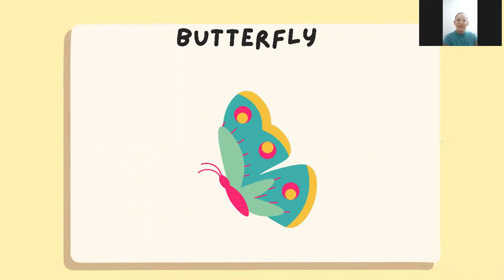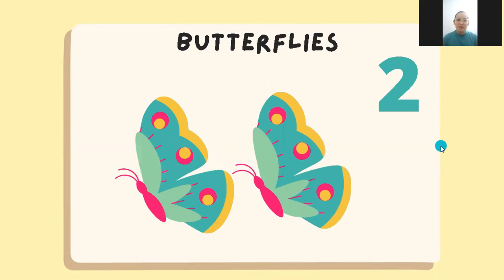What is this? This is a butterfly. It's beautiful — we like the butterflies. Let's count. We have one and two butterflies. This is the number two. We can count one and two.